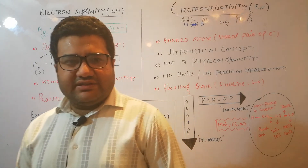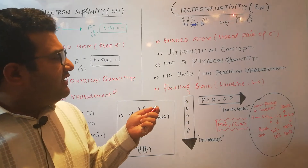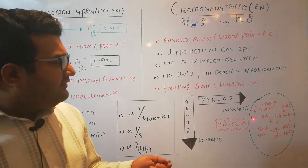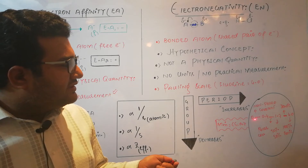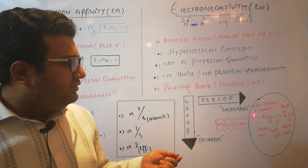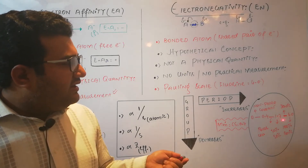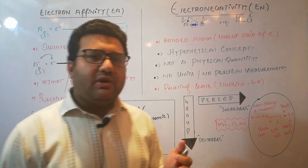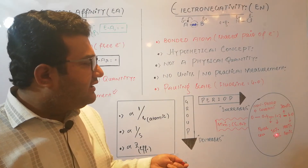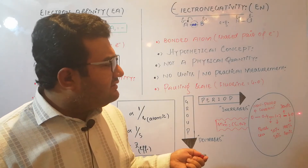Now, regarding the importance of electronegativity: this table is very important for MCQs. If the electronegativity difference between two atoms ranges from 0 to 0.4, the bond is non-polar covalent. If it is 0.4 to 0.7, the bond is polar covalent. If the electronegativity difference equals 1.7, there is 50% ionic and 50% covalent character in that bond. If the difference is greater than 1.7, the bond is ionic.